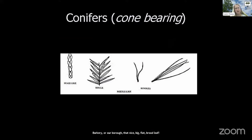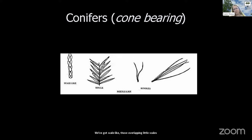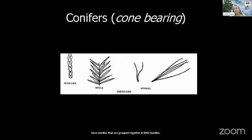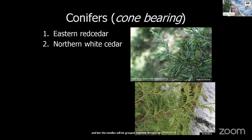Our needle-like leaves — we only have about eight species native to Kentucky, with bald cypress being one. Everything else has broad leaves, like this shellbark hickory or our bur oak with that nice big flat broad leaf. On conifers, we have needles in a couple of different arrangements that help with identification. We've got scale-like overlapping needles, single-type needles individually attached to the twig, and needles grouped together in little bundles called fascicles, with needles grouped in twos up to fives.